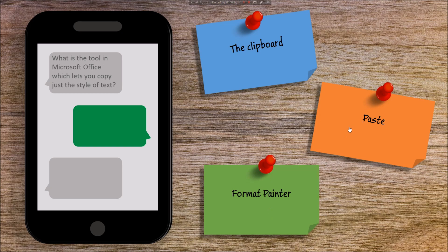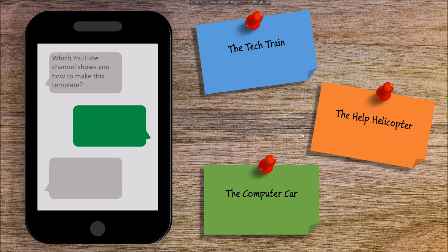Let's go for 'Paste' over here on the right-hand side. I click that and you can see I've sent my text message and received a response. In this case unfortunately I didn't choose the correct response. We'll go on to the next question — I'll click Next. Here again we have a text message which says 'Which YouTube channel shows you how to make this template?' This time let's go for The Tech Train, and fantastic — we've sent that text message and received a response saying we got that correct.